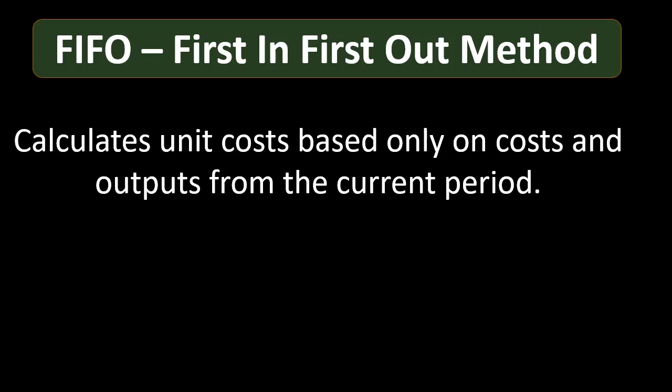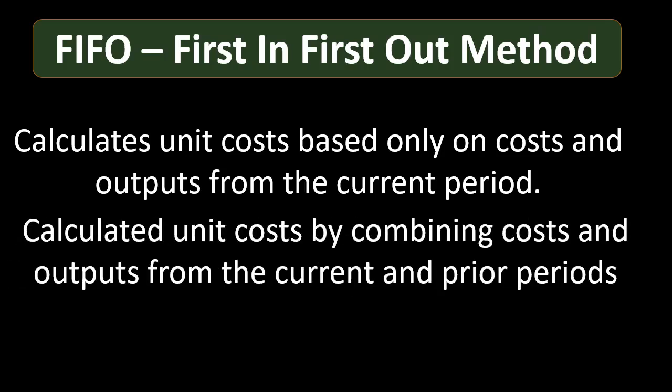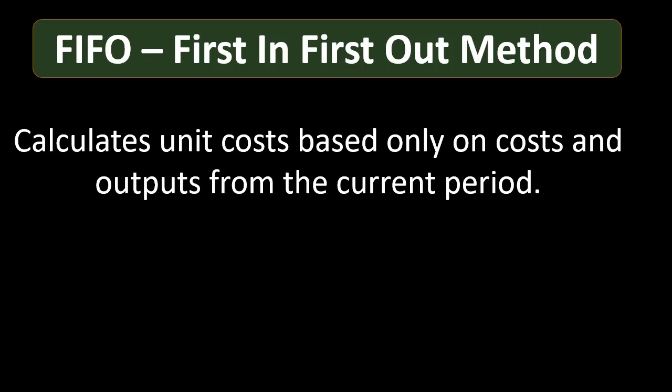The first in first out method calculates unit cost based only on costs and output from the current period. We look at the costs for the current period and apply those current period costs using a first in first out assumption. Our comprehensive problem will use the first in first out method, while our example problems and illustrations will use the weighted average method.